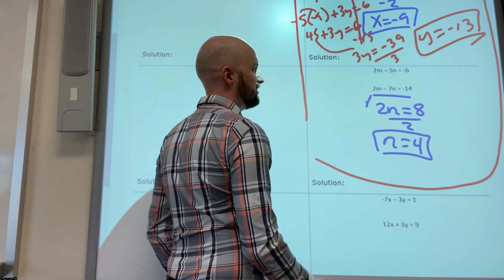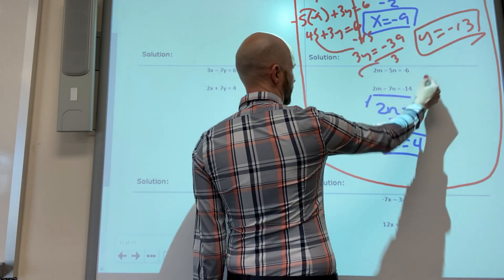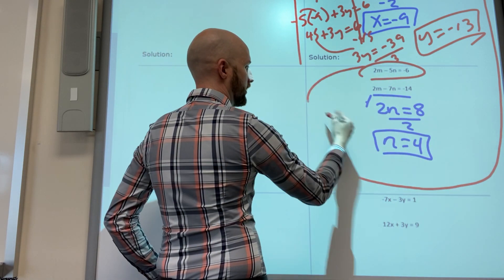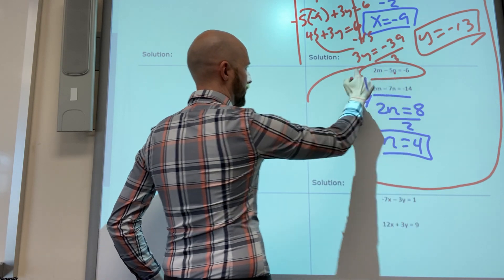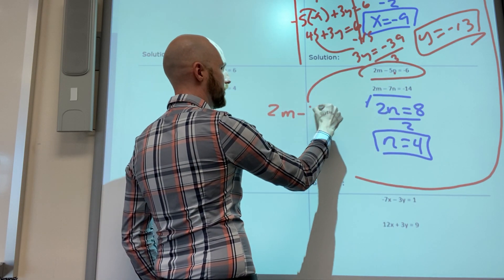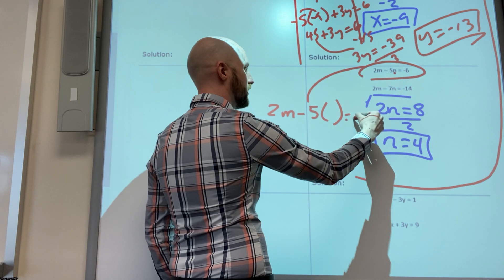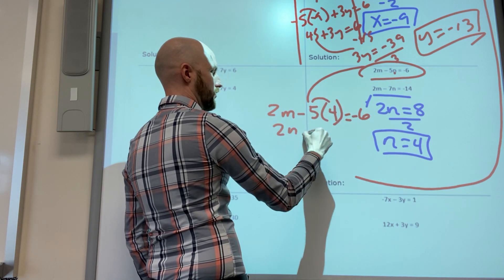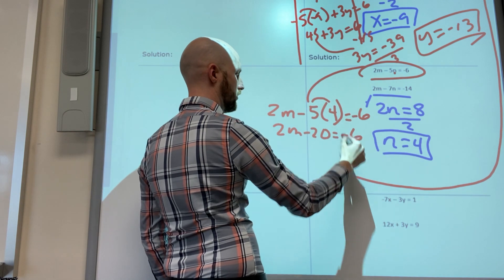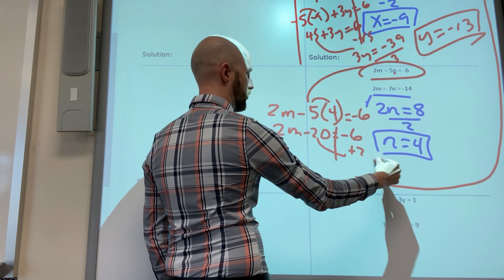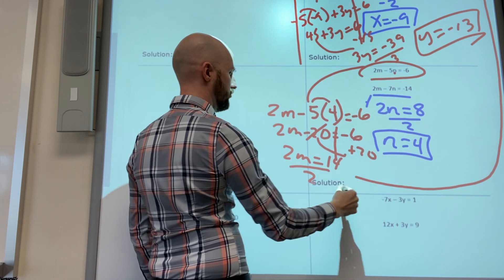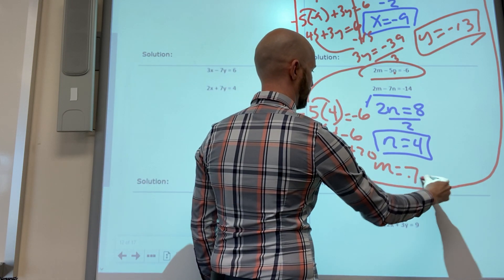Two minus five. They both look kind of crazy so I'll do this one. So I know n. Two m minus five n equals negative six and it's four, so negative 20 plus 20, divided by two, n equals seven.